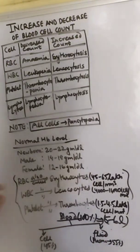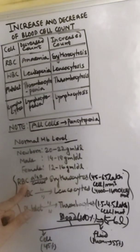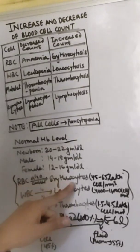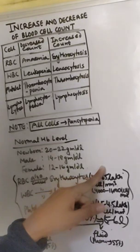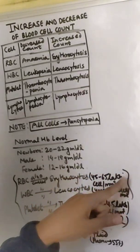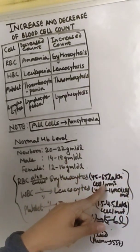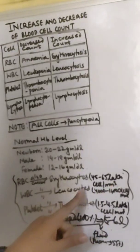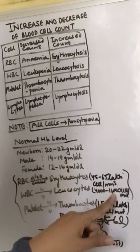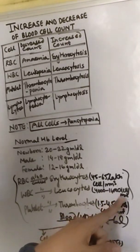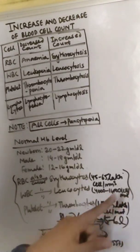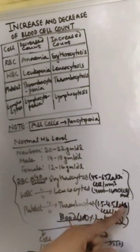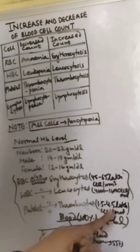And fluid, plasma, consists of 55%. So blood cell consists of RBC, WBC, platelets. RBC also called erythrocytes, it is 45 to 65 lakh cells per millimeter cube. And WBC, leukocytes, 4,000 to 11,000 cells per millimeter cube. And platelet is thrombocytes, 1.5 to 4.5 lakh cells per millimeter cube.